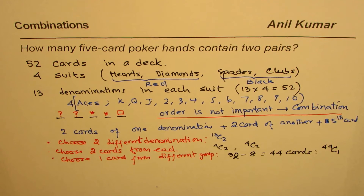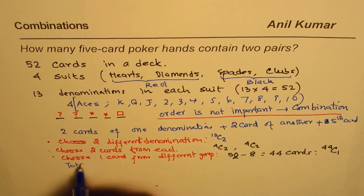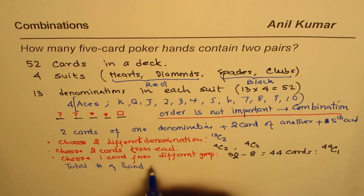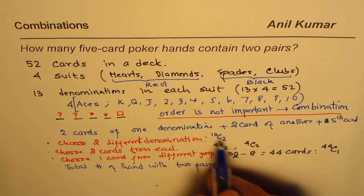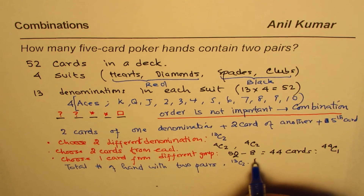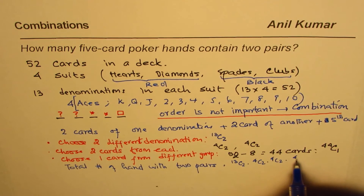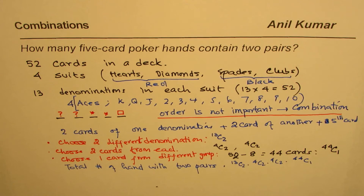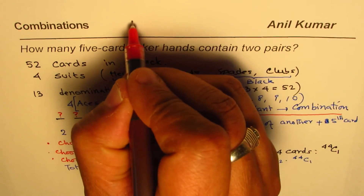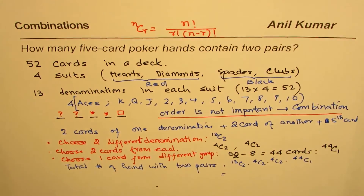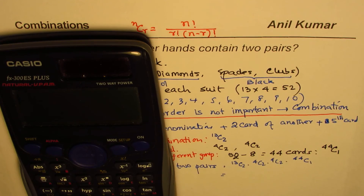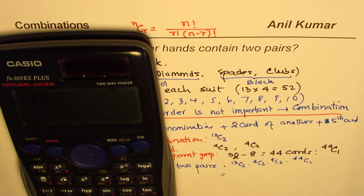The total number of hands with two pairs is the product of all these by the counting principle: 13C2 × 4C2 × 4C2 × 44C1. We know nCr equals n factorial over r factorial times (n minus r) factorial. Using the calculator: 13C2 is 78, and 4C2 is 6.